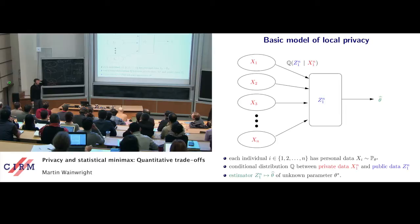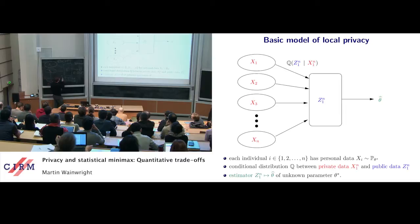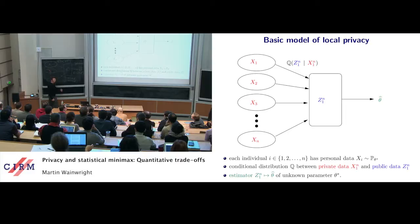There's another version called global differential privacy, not local. It's a different model in which you have a central authority that you do trust, and the privacy is imposed at a later link. Depending on the application, that may or may not be suitable. We're going to focus on this local model where we do not trust the central authority.